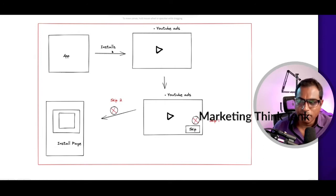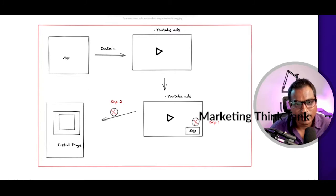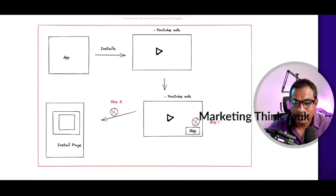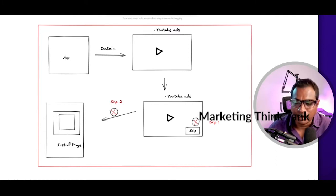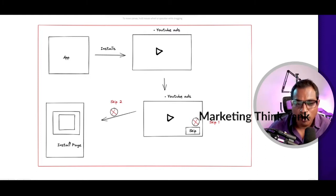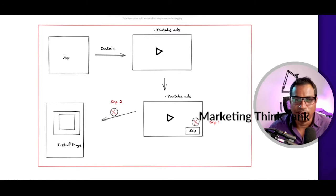What you see on the screen: I have a mobile app and I want to install it by running YouTube ads. When my ads run, there is a way where viewers can skip the ads — that's the first obstacle. The second: even if they don't skip the ad and they click through to your install page, they may or may not install the app. That's the second level where they can skip.